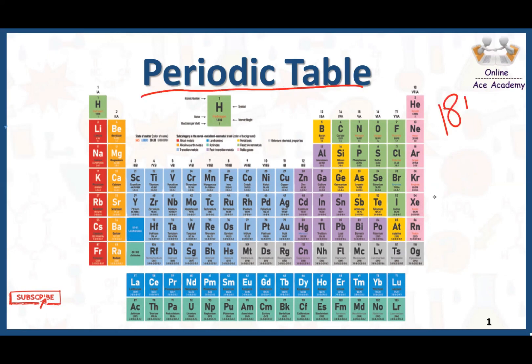At the end of the 18th century, scientists had discovered 23 elements. Slowly and gradually, as time passed, scientists started discovering other elements as well. It became very difficult for scientists to memorize the physical and chemical properties of all these elements, so they decided to arrange all the elements in a systematic way.